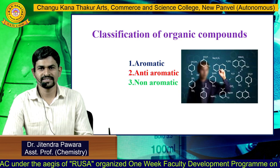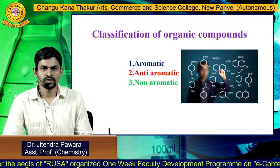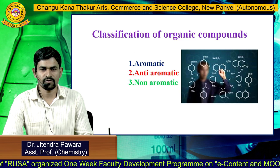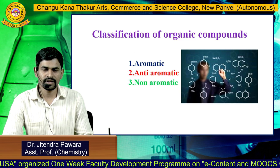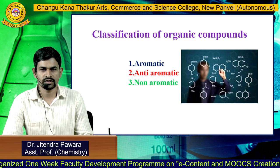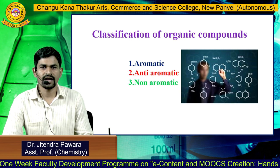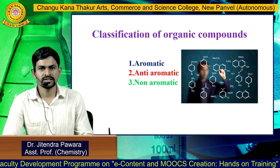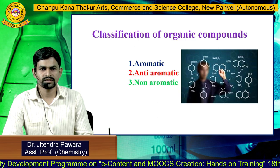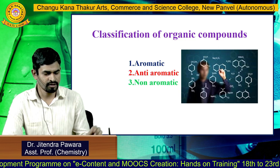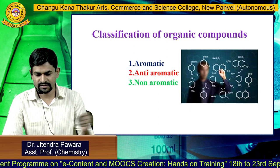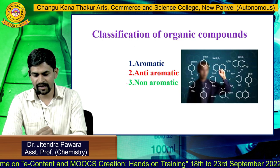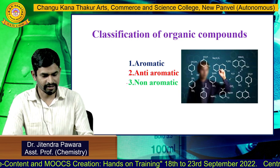First we will see what is meant by organic compound. A carbon-containing compound is called an organic compound, and along with carbon, hydrogen, oxygen, and nitrogen are the atoms present in organic compounds. Organic compounds are classified into three types: the first one is aromatic, second one is anti-aromatic, and third one is non-aromatic.